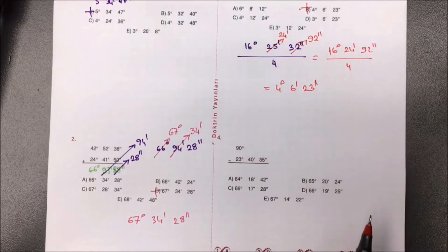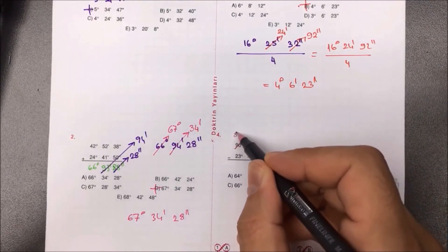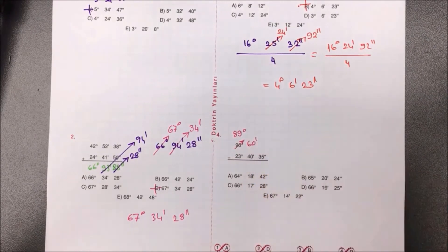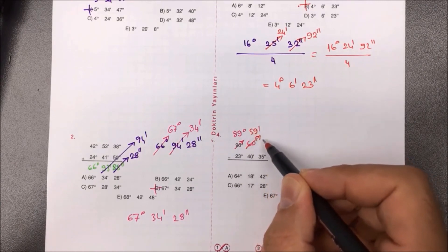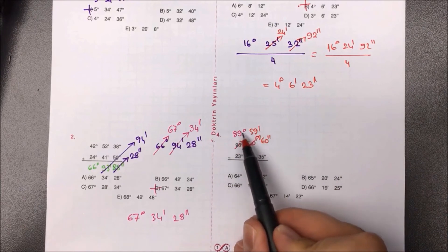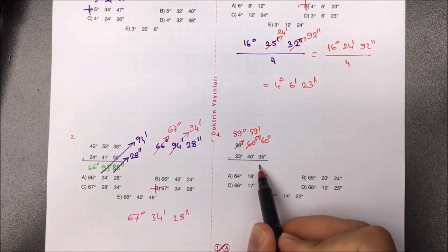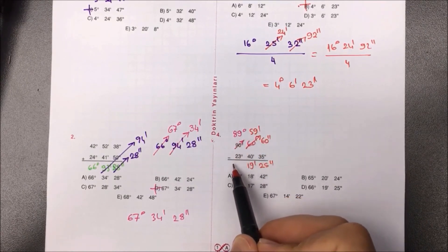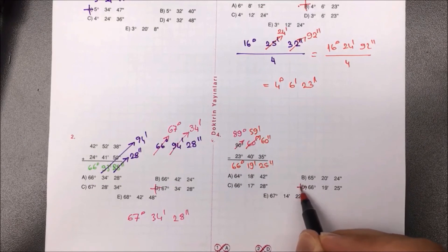Dördüncü soruda 90°'den verilen açı çıkarılacak (tümler açı). 90° = 89° 59' 60'' şeklinde düzenlenir: 1 saat = 60 dakika, 1 dakika = 60 saniye olarak aktarılır. 60' − 35'' = 25'', 59' − 40' = 19', 89° − 23° = 66°. Yanıt: 66° 19' 25'', D seçeneğidir.